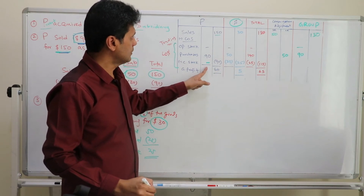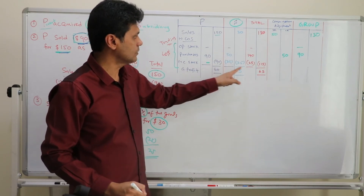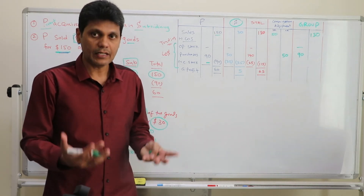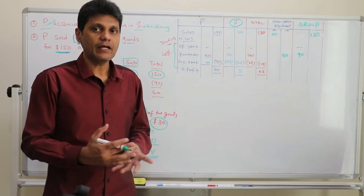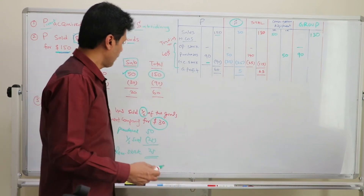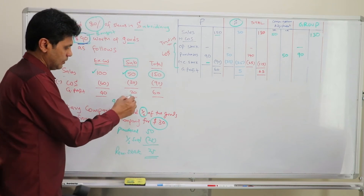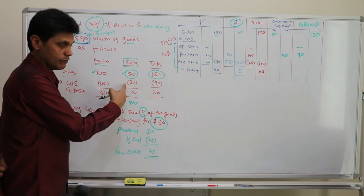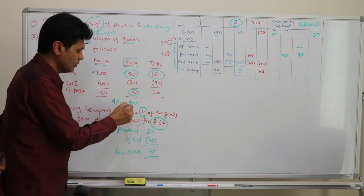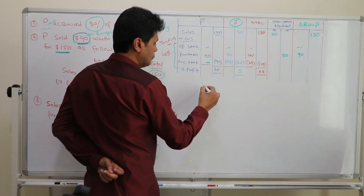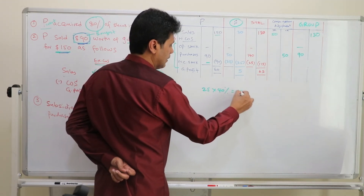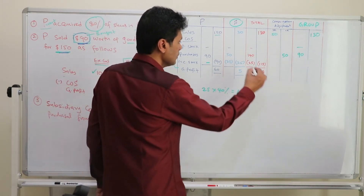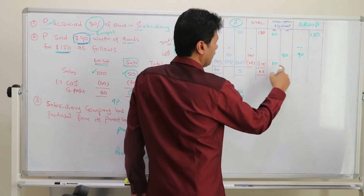For the closing stock, the parent doesn't have any stock, but the subsidiary company has $25 worth of goods. However, we cannot take this $25 in the group financials as-is, because it carries unrealized profit. The gross profit margin on the parent's intercompany sale is: profit of $20 divided by sales of $50 equals 40%. So the profit margin included in the $25 closing stock is $10, which is unrealized profit that cannot be recognized. Therefore, you debit cost of goods sold by $10, and the group closing stock becomes $25 minus $10, which equals $15.